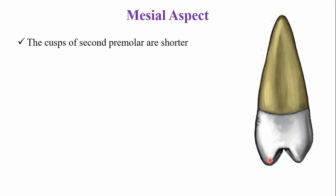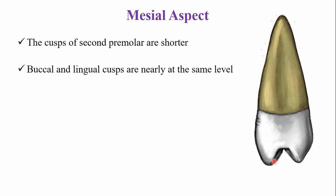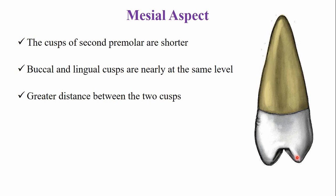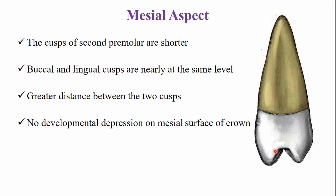The cusps of the second premolar are shorter compared to the first premolar. Because of the lesser cervico-occlusal height of the crown, the buccal and lingual cusps are nearly at the same level — the lingual cusp is only very slightly shorter than the buccal cusp. In the first premolar, the lingual cusp is much shorter. There is also a greater buccal-lingual width of the crown compared to the first premolar.